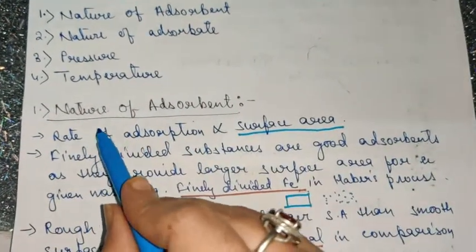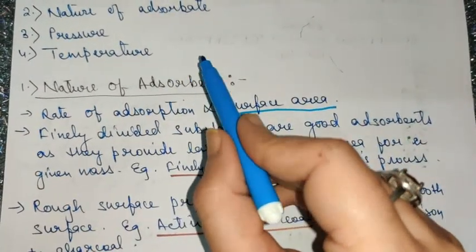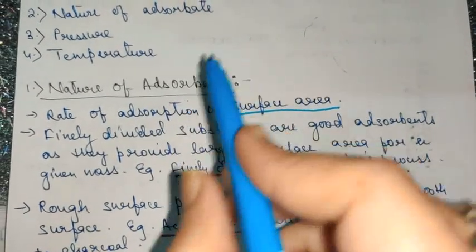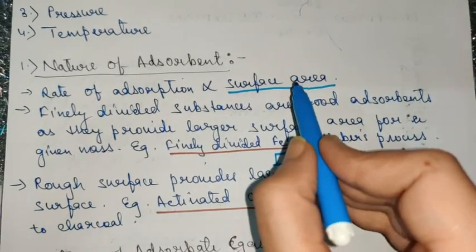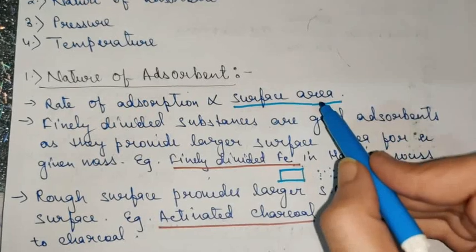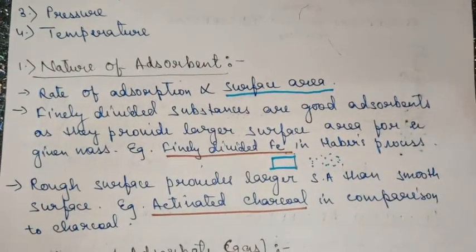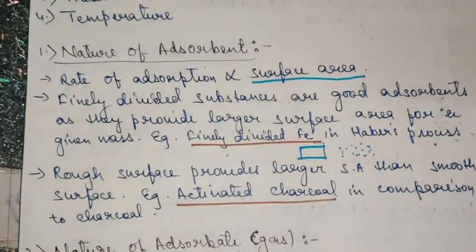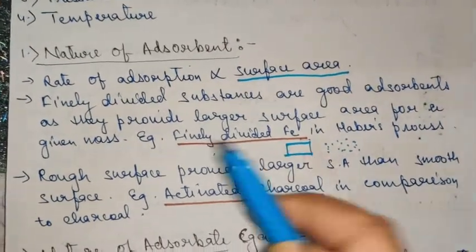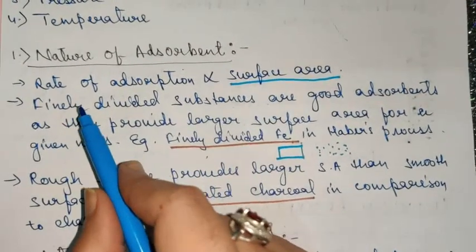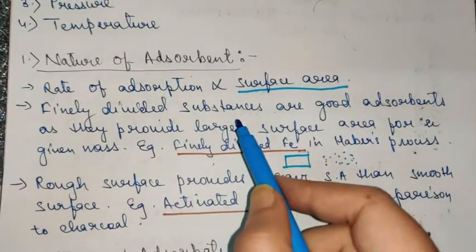The first factor is nature of adsorbent. Adsorbent is the surface over which the process of adsorption occurs. When we talk about the surface, the surface area plays a key role. The rate of adsorption is directly proportional to the surface area — the more the surface area, the more availability for adsorption, hence the rate will be high. Finely divided substances are good adsorbents because they provide a larger surface area.